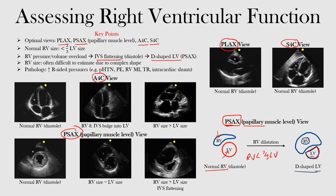Looking at the echo image at the papillary muscle level, all the starred areas highlight the right ventricle. After erasing those markers, this is your right ventricle and this is your left ventricle. We're at the papillary muscle level in the parasternal short axis view.